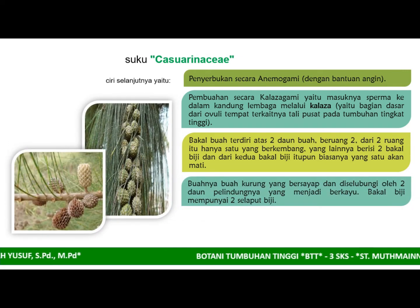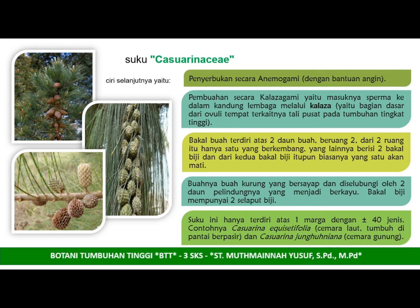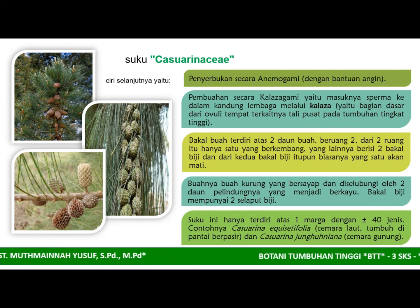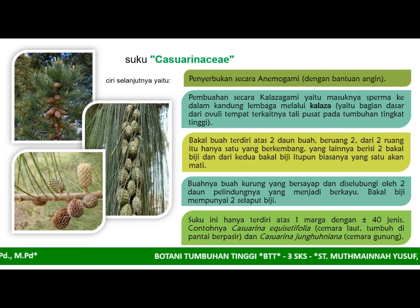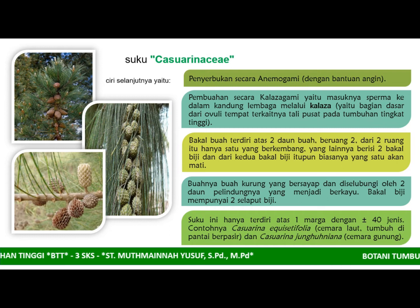Buah kurung yang bersayap dan diselubungi oleh dua daun pelindung yang mengapit bakal biji. Suku ini hanya terdiri atas satu marga dengan kurang lebih 40 jenis. Contohnya adalah Casuarina equisetifolia yang tumbuh di padang pasir, atau Casuarina junghuhniana, yang dikenal sebagai cemara gunung.